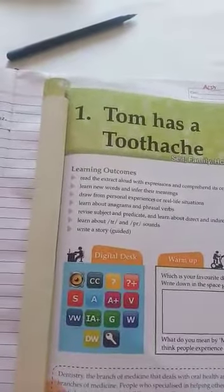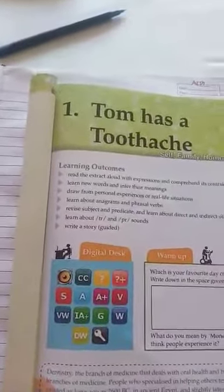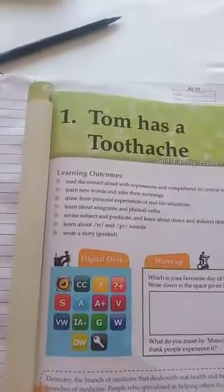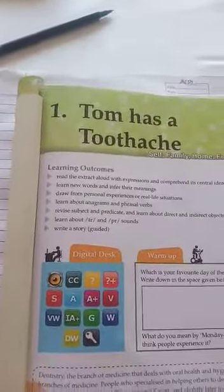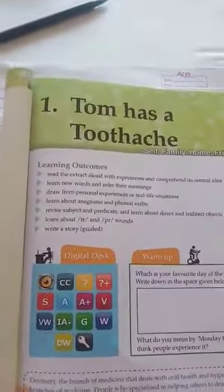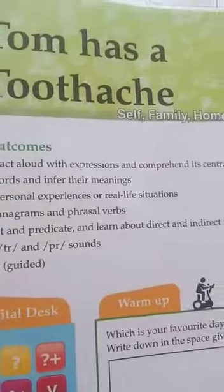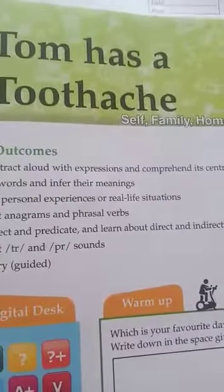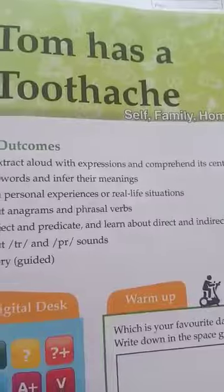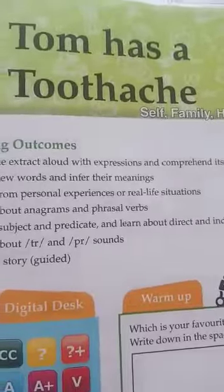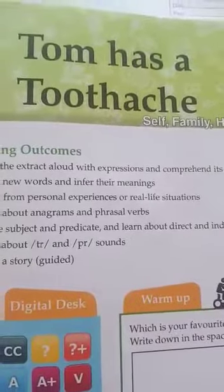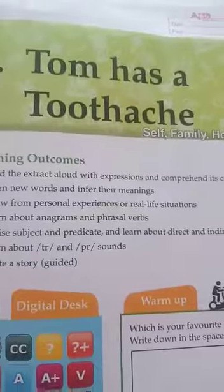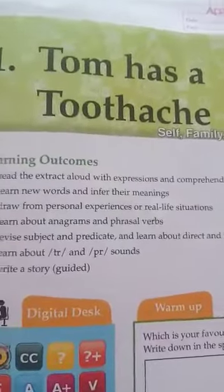Aunt Polly told him she will pull out the tooth with a silk thread. Tom hurriedly declines her offer and promptly informs her that he will not be staying home from school. An amused Aunt Polly punishes him for planning to miss school and go fishing.